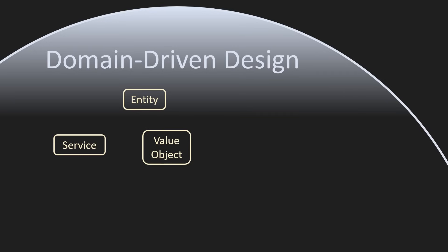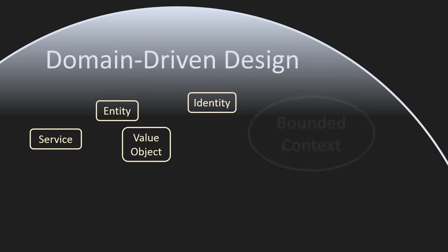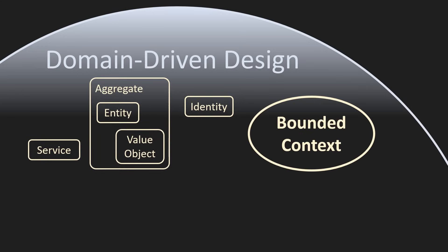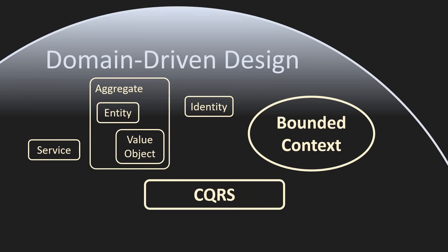The division into entities, value objects and services, object identity, bounded contexts, aggregates, and CQRS — which is older than DDD — are elements we find in any project. Many programmers don't know how many of these ideas came from DDD, yet they adopt them naturally in their everyday code. That shows there is truth in DDD.